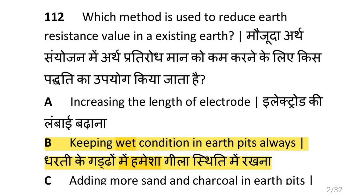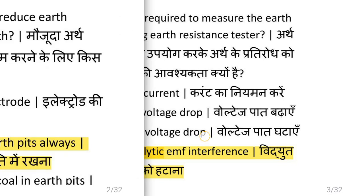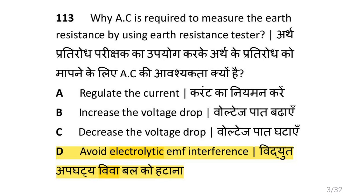Which method is used to reduce earth resistance value in an existing earth? That is keeping wet condition in earth pits always. Why is AC required to measure the earth resistance by using earth resistance tester? To avoid electrolytic EMF interference.